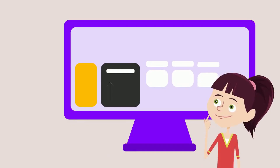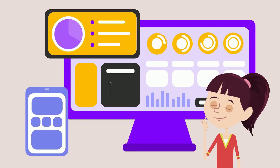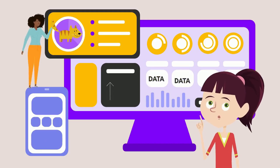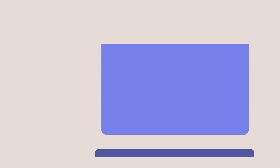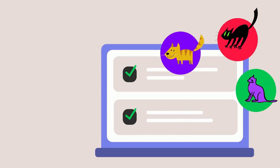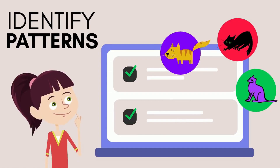A computer, like a curious kid, doesn't know much at first, but we can teach it to learn things by showing it lots and lots of examples. And just like you learn to recognize a cat, the computer learns to identify patterns in the data we give it — like pictures of cats. Let me break it down step by step, because I like a clear roadmap to understanding things.